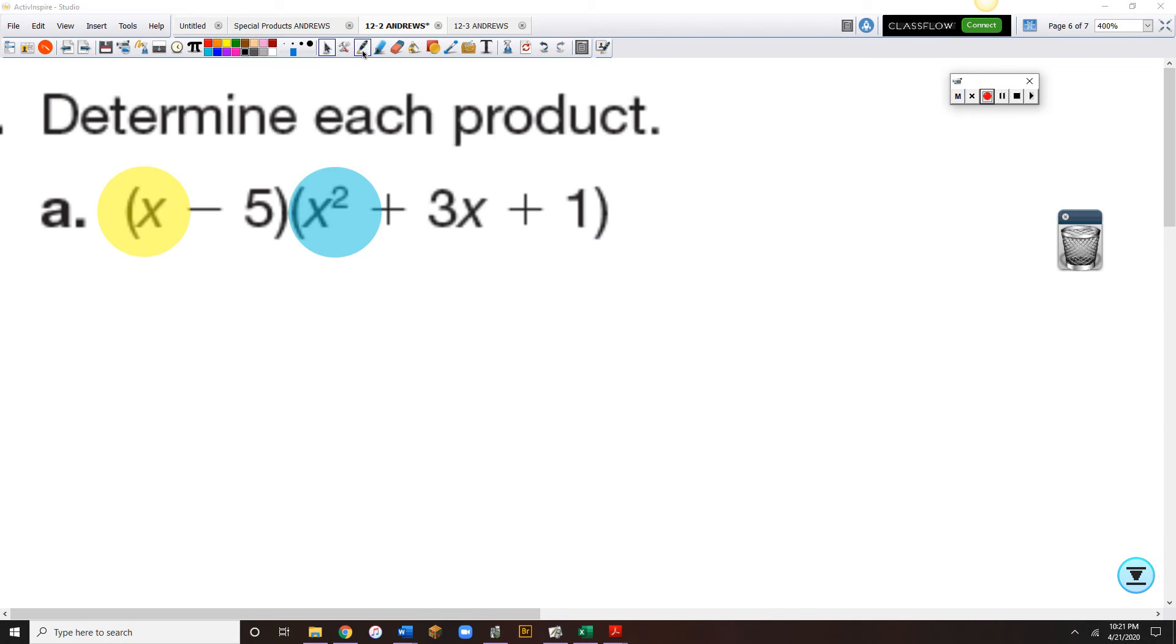So I'm going to start with x, multiplying everything through, we're going to distribute the x to the second set of parentheses. So x times x squared would be x cubed, because remember there's an imaginary 1 here. So 1x and then 2 more x's, that's x cubed. So x times a plus 3x is a plus 3x squared. And x times a plus 1 would be a plus 1x.